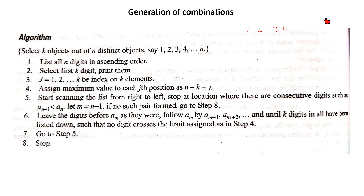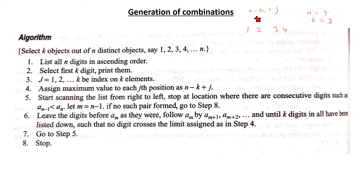Suppose we have the numbers 1, 2, 3, 4 and we have to find combinations of 3 elements out of 4. So n equals 4 and k equals 3. The maximum value formula n − k + j gives 4 − 3 + j, for j from 1 to 3.